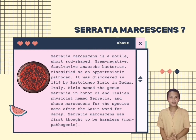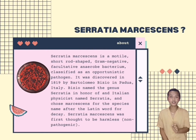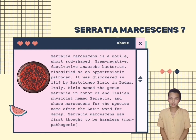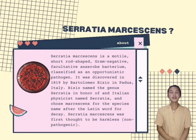Serratia marcescens was first thought to be harmless or non-pathogenic. When we say non-pathogenic, it means it's not capable of causing disease, while pathogenic is the opposite — it is able to cause disease, as with this Serratia bacteria.